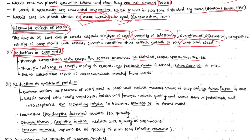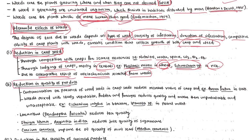Weeds also cause lodging of crops. If weed infestation is heavy, lodging effects can be seen — mostly in cereals. For example, Phalaris minor infestation causes lodging in wheat, and Echinochloa species causes lodging in rice. Additionally, certain weeds secrete allelochemicals — inhibitory chemicals that have harmful effects on surrounding crops — which also reduce crop yield.